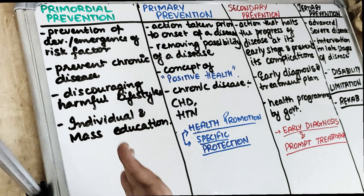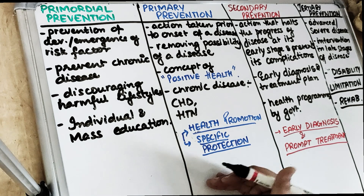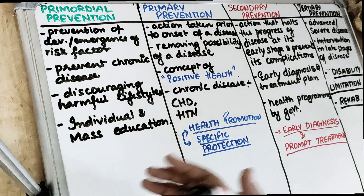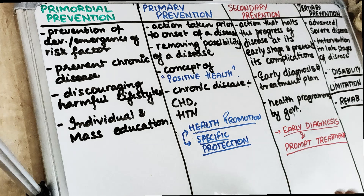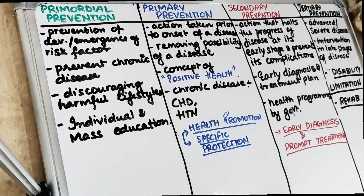Levels of prevention are the levels at which we are preventing the disease — either it can be at an early or a late level of prevention. In order to make you understand, let me give you an example to make it easier for you.